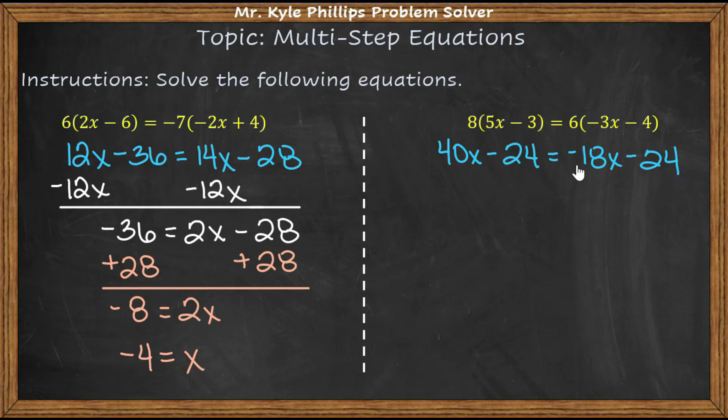Same concept here. Take all the numbers, move them on one side. All the letters, the x's, move them to the other. So I like to move the smaller x. So here I will add 18 to both sides. And then because we're putting the x's on the left, here I'll add 24. I'm kind of doing two steps at once here.